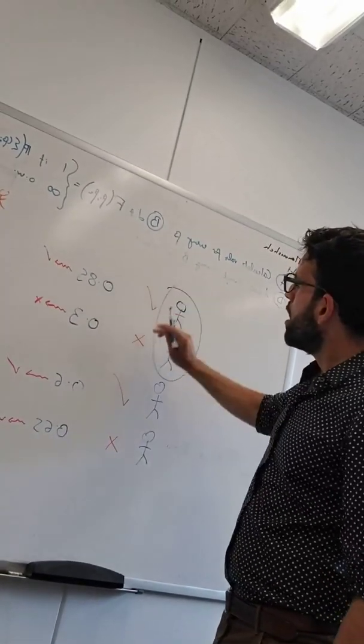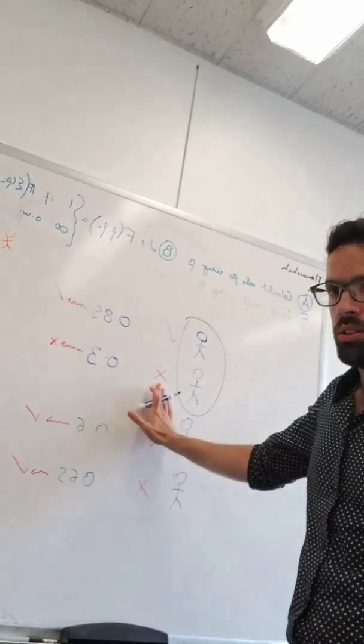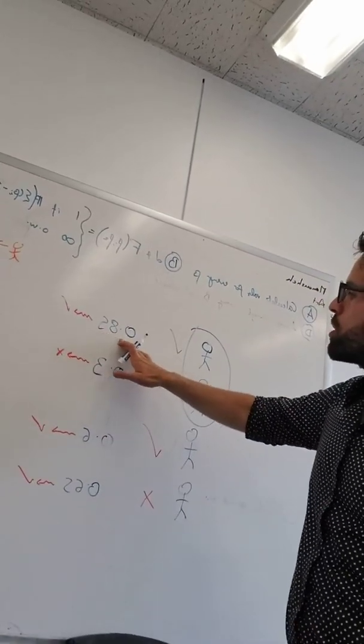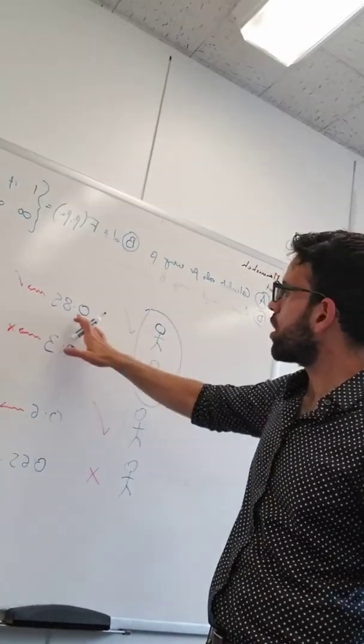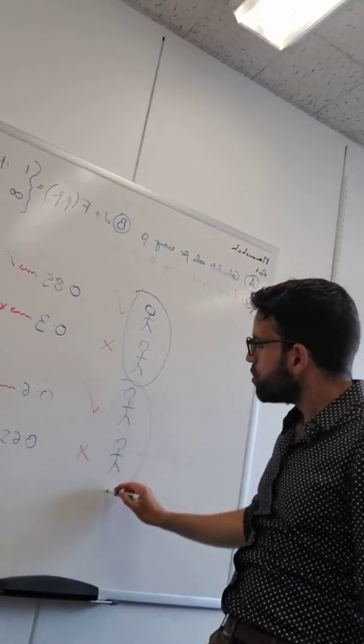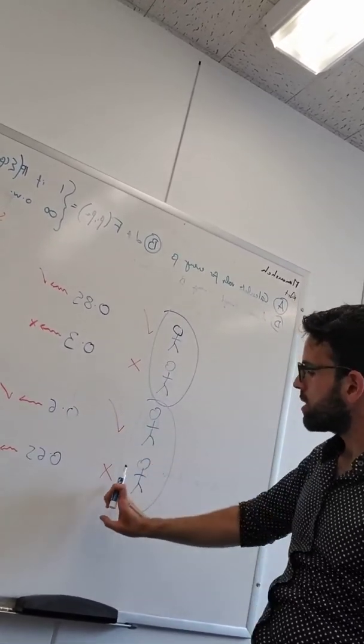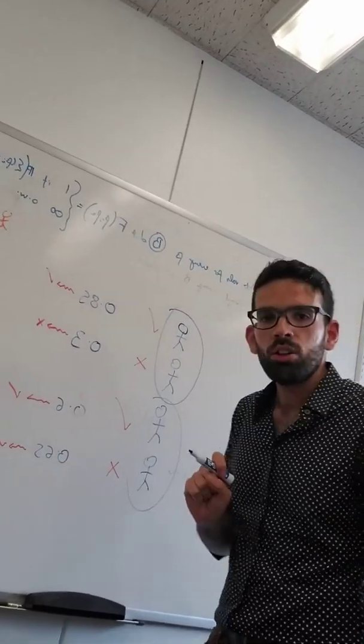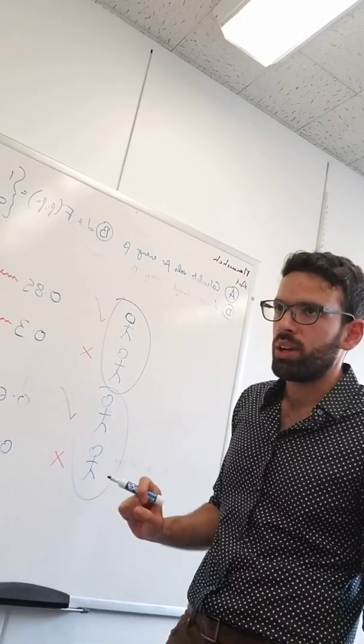What the AUC does is it simply says, let me consider pairs of people and let's see whether the scores are ordered in the correct direction. Suppose I take these first two people. This one was truly a contractor, this one wasn't. We look at this person's score as 0.85, this person's score is 0.3. That's good news, right? The contractor got a higher score than the non-contractor. However, if I look at these two people, this person was a contractor, got a score of 0.6. This person was not a contractor, got a score of 0.65. That's bad because the non-contractor got a higher score than the contractor.